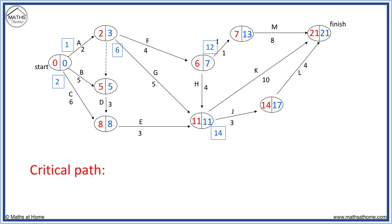The critical path is found by joining the nodes where the numbers are the same: 0-0 to 5-5 to 8-8 to 11-11 to 21-21. That is tasks B, D, E, K.